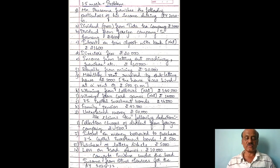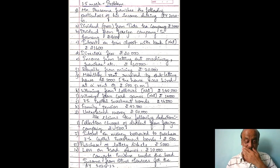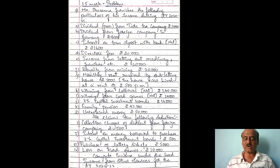Unexplained money from undisclosed sources is taxable under income from other sources. Now, regarding deductions: collection charges of dividend from foreign company — this is an allowable deduction. Interest on money borrowed to purchase the 7% capital investment bond — since the bond is exempted, interest is not allowable. Purchase of lottery ticket is allowable. Loss on card game is also an allowable expense.